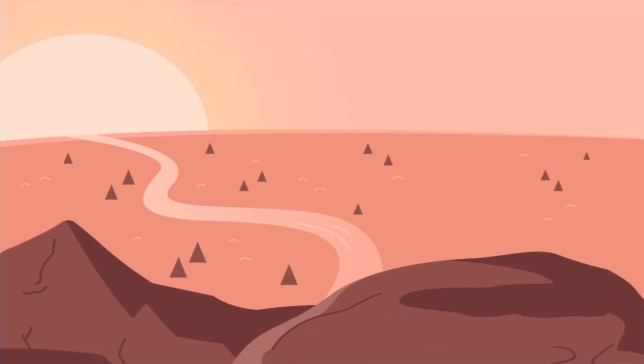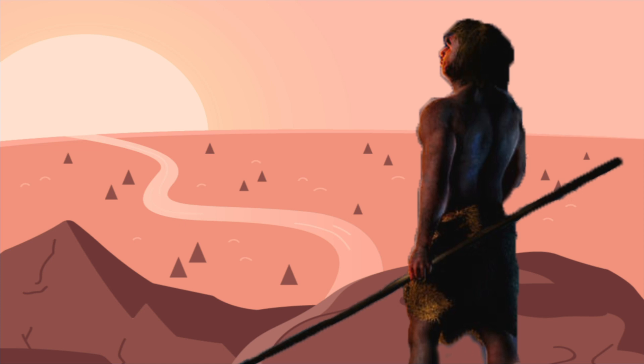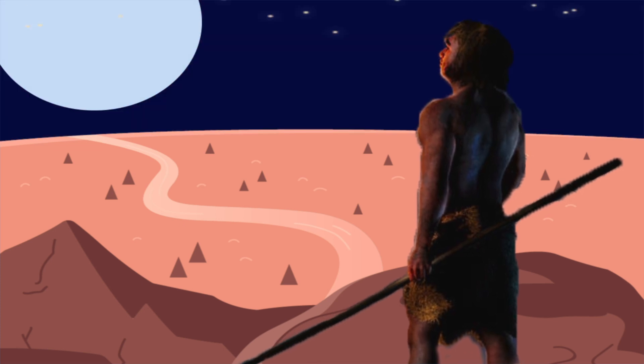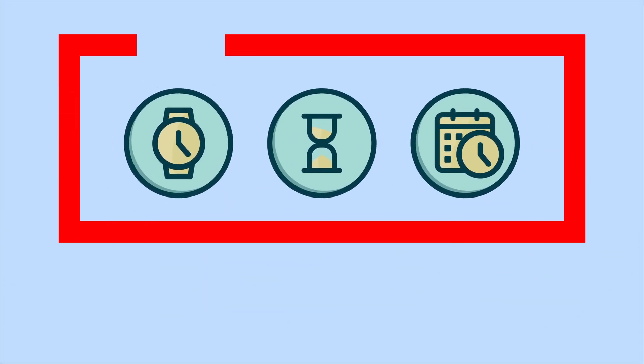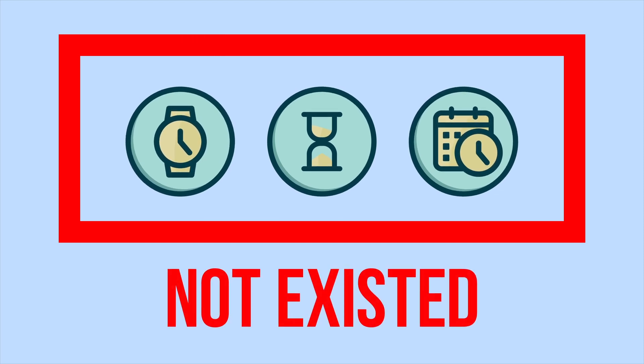For thousands of years, early humans gazed at the sky to track the sun, moon, and stars. Daylight was linked to the sunrise and sunset, while night fell with the darkness enveloping the earth. In those times, there was no concept of hours and minutes as we know them today. Our lives revolved around nature and its rhythms.